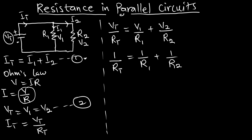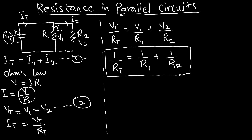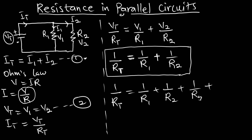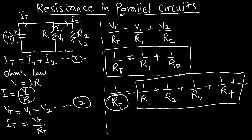This gives us 1 over RT equals 1 over R1 plus 1 over R2. Anytime resistors are arranged in parallel, this equation is true for finding the total resistance — it is called the reciprocal formula. No matter the number of resistors arranged in parallel, if there are four it is still 1/RT = 1/R1 + 1/R2 + 1/R3 + 1/R4 and so on. After computing this, you reciprocate your answer to get the total resistance.